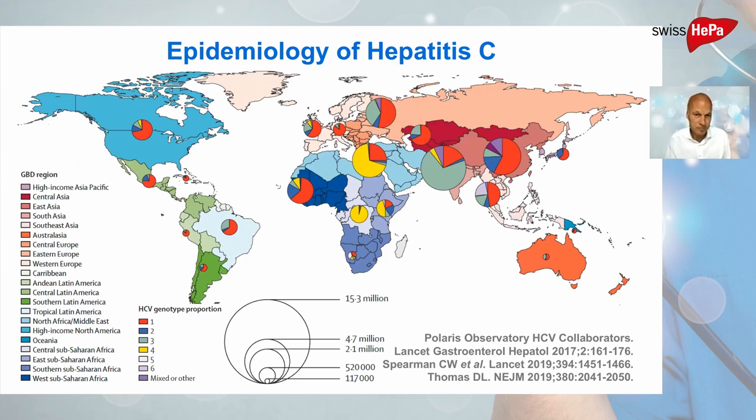This map illustrates the current epidemiology of Hepatitis C virus infection. As you can see, the virus is distributed globally, but with some areas that have a high prevalence, including Egypt, where a particular genotype — genotype 4 — predominates.